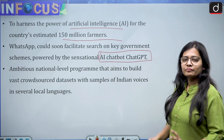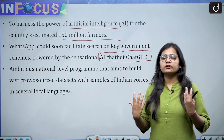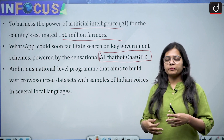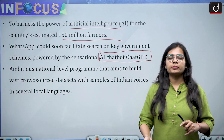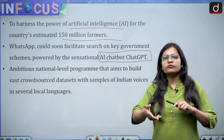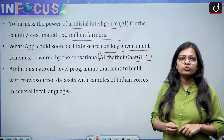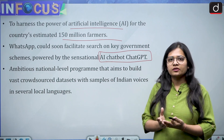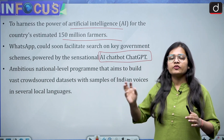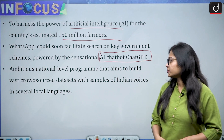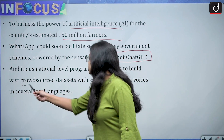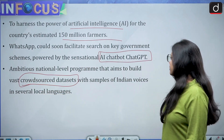ChatGPT works on the technique of artificial intelligence and is dialogic — you ask a question, ChatGPT gives an appropriate answer, and you can continue asking further questions. When ChatGPT is able to give such productive and good answers that can actually benefit people, why not use it for welfare? The government is now building an ambitious national-level program that aims to build vast crowd-sourced data sets with samples of Indian voices in several local languages.